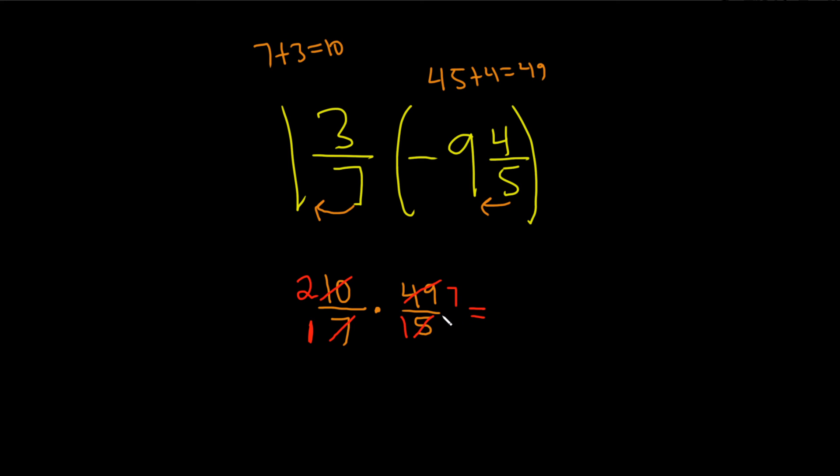Now we can just multiply straight across. 2 times 7 equals 14. 14 over, and 1 times 1 equals 1. 14 over 1 equals 14, and that's the final answer.